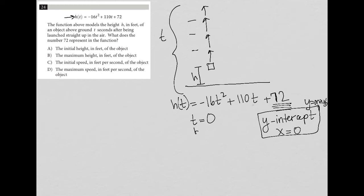t equaling 0 would be before launch, right before the object is launched. If t equals 0, I plug 0 in here and here: negative 16 times 0 becomes 0, 110 times 0 becomes 0, and all we're left with is 72. So h(0), the height before any time has passed, equals 72.